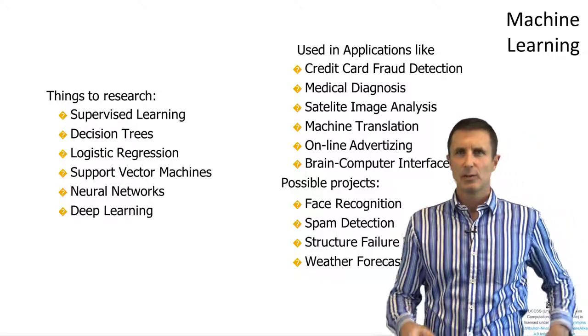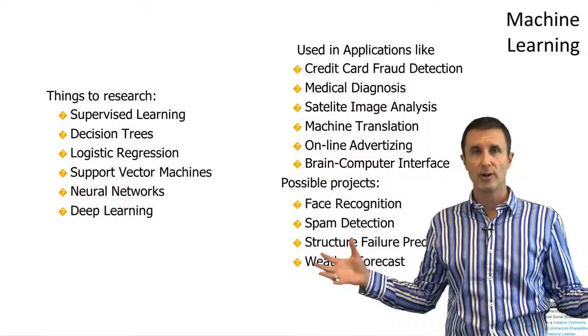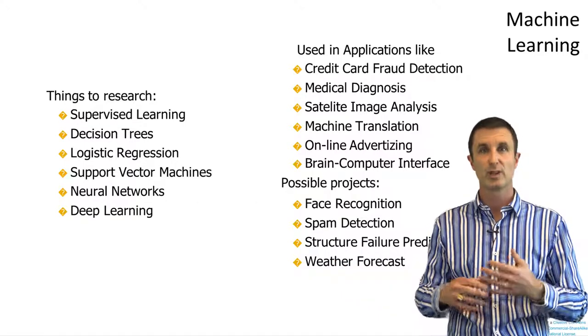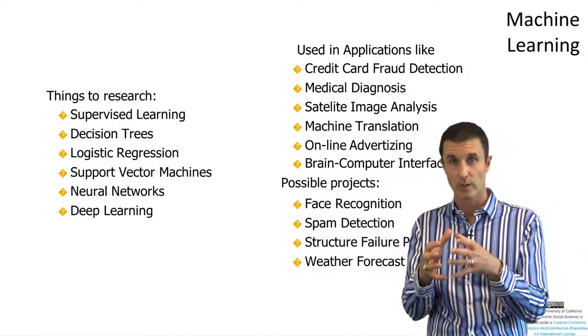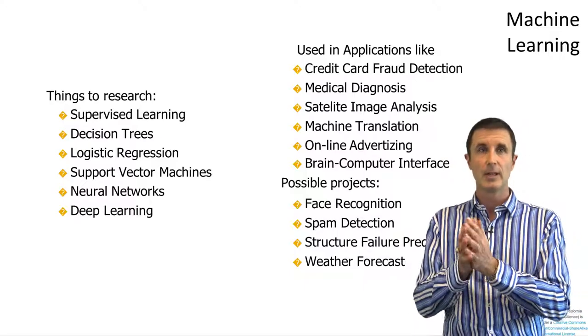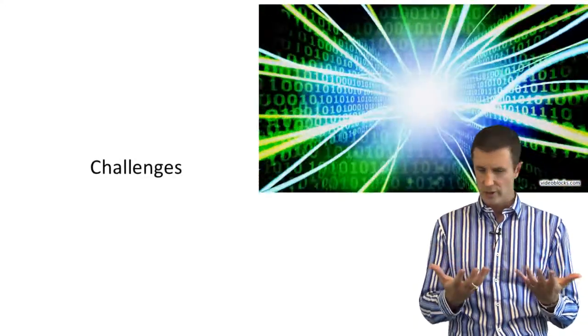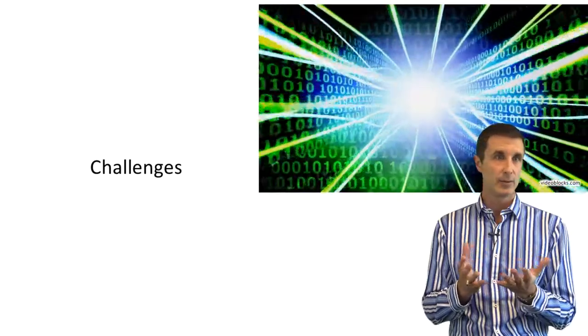So those are some examples of AI. It's a fairly broad field. I think almost everyone who works in AI works in some subfield and really identifies pretty closely with that subfield. What are those current challenges in AI? I'll give you some examples.